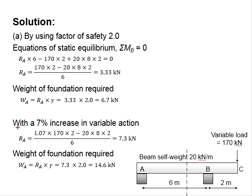To determine the reaction of Ra with the 7% increase of the variable actions, you will multiply with an additional 7% to the calculation steps. This gives you Ra equals to 7.3 kN. This 7.3 kN is to be multiplied with the factor of safety of 2.0, which will obtain 14.6 kN.